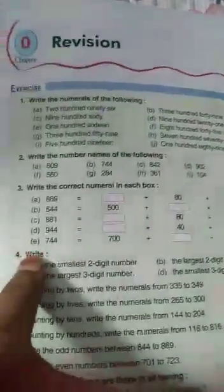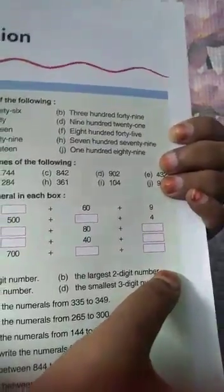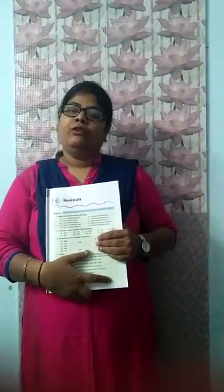Question number 4b is write the largest two-digit number, and the largest two-digit number is 99. If you add 1 to the largest two-digit number, you will get the smallest three-digit number, and the smallest three-digit number is 100.